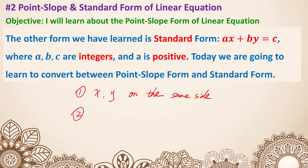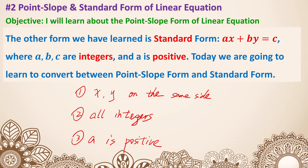The second requirement is all integers — so a, b, and c are all integers. The last requirement is that a is positive; you can't start with a negative number, and a is the coefficient in front of x. Those are the three requirements.